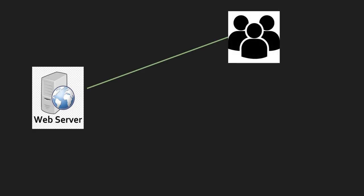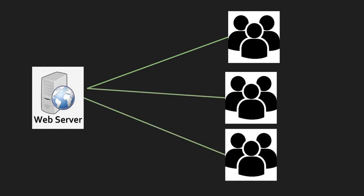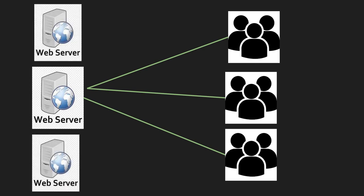Let's take an example: you've created a web application, deployed it on a web server, and users started using it. Initially it's a very small application. Users liked it and a huge number started using it. Your small application is not able to handle such a load, so you need additional compute power. You can create identical instances running the same application — your app now runs on three compute servers instead of one.